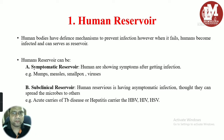First, we are going to discuss human reservoirs. Human bodies have a defense mechanism to prevent infections; however, when it fails, humans become infected with microorganisms and can then serve as reservoirs — meaning microorganisms can get transmitted from infected humans to other people. Human reservoirs can be of two types: symptomatic reservoirs and subclinical reservoirs.